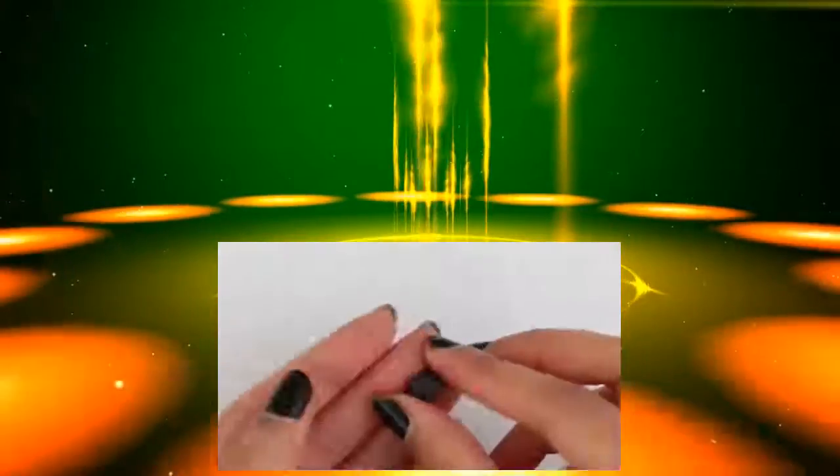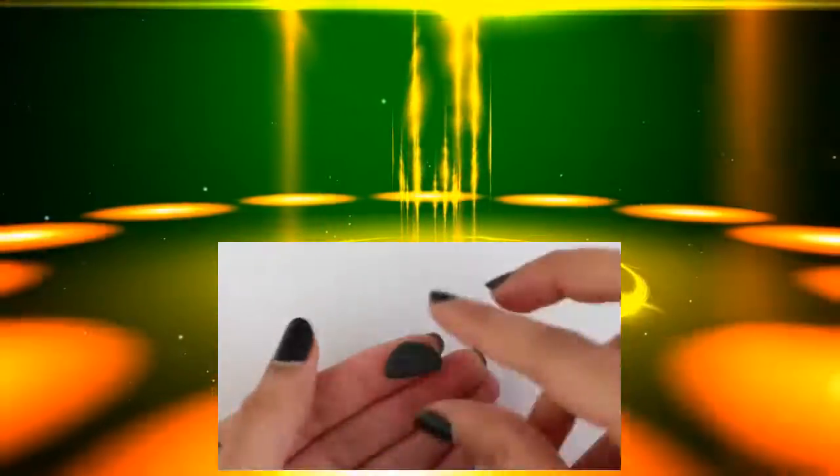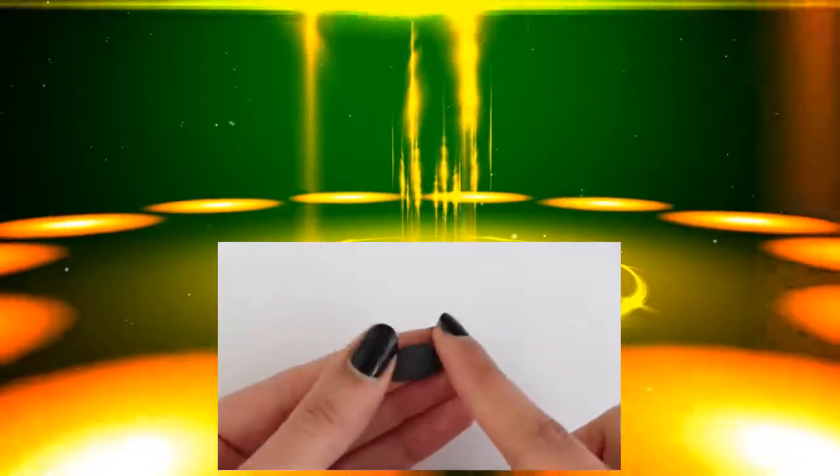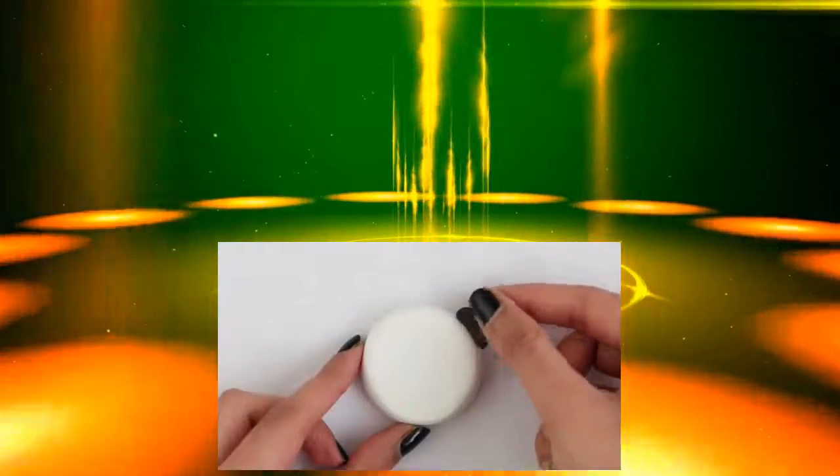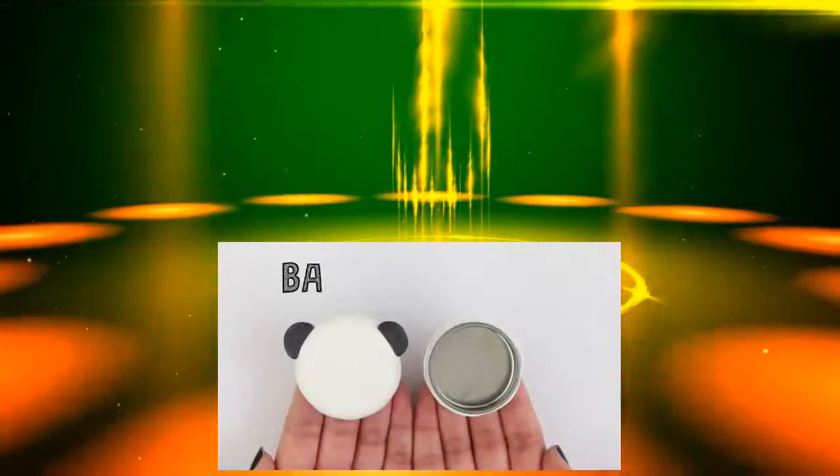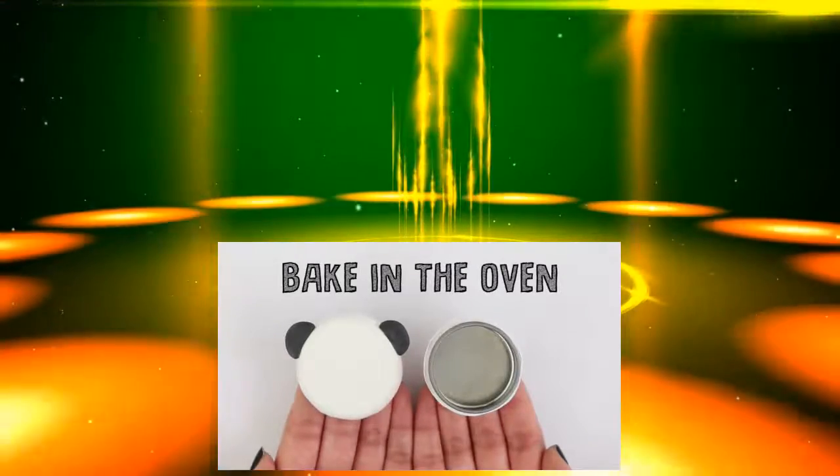The next one that I'm showing you is the panda. So I took a ball of black polymer clay and I'm going to cut it in half. I'm flattening it down with my fingers and I'm making sure that it is kind of like a half circle shape. Popping it onto the container that I already covered with some white polymer clay. Let this bake in the oven for 20 to 25 minutes.